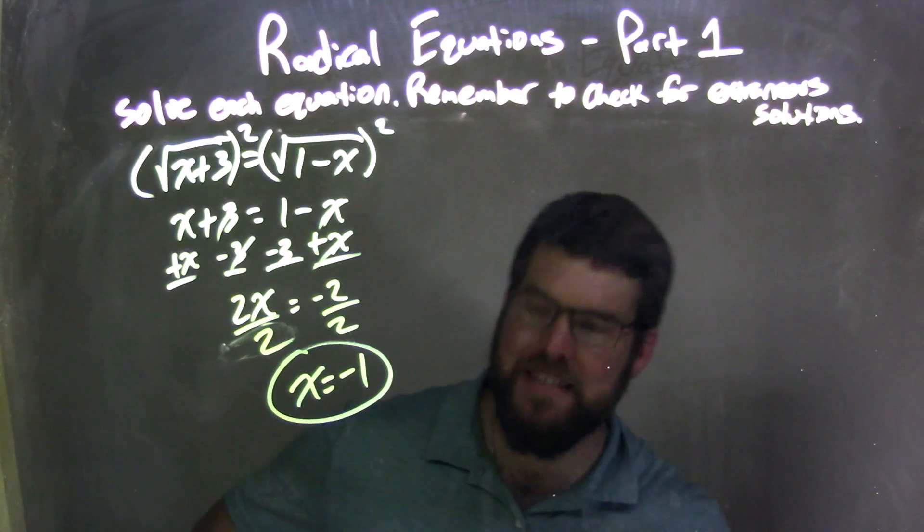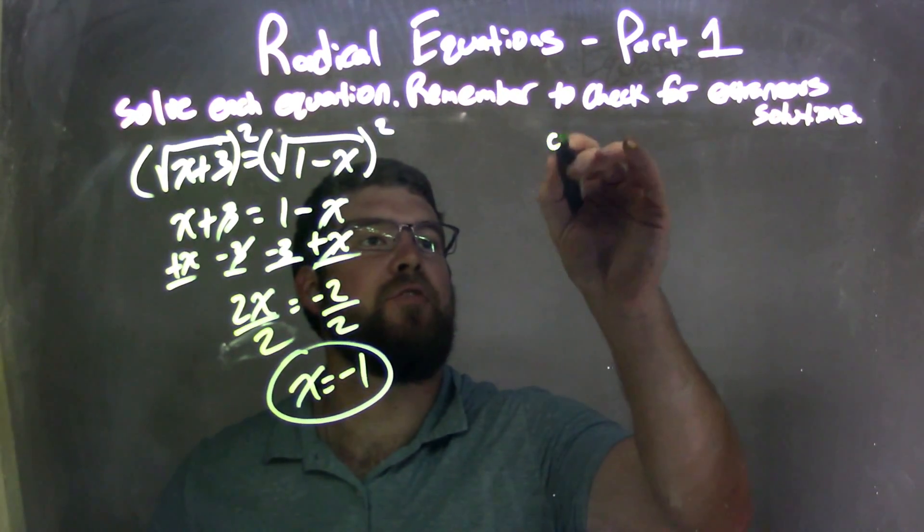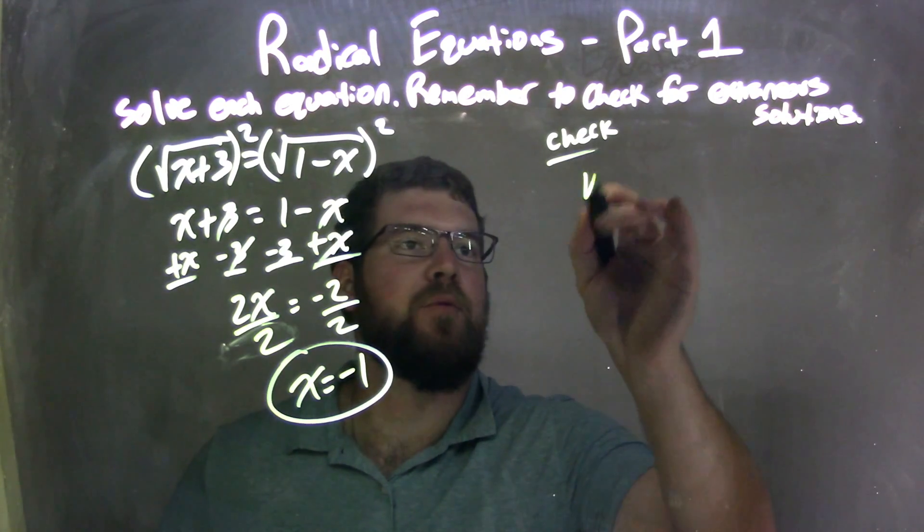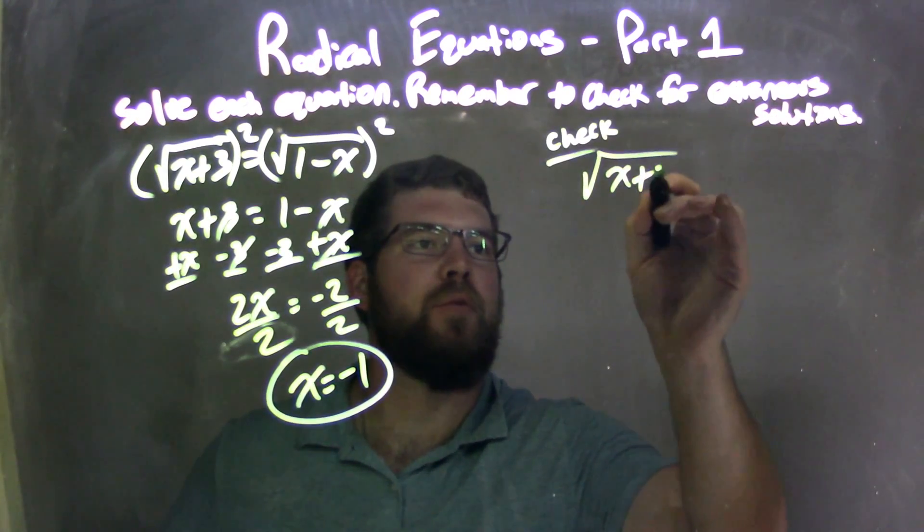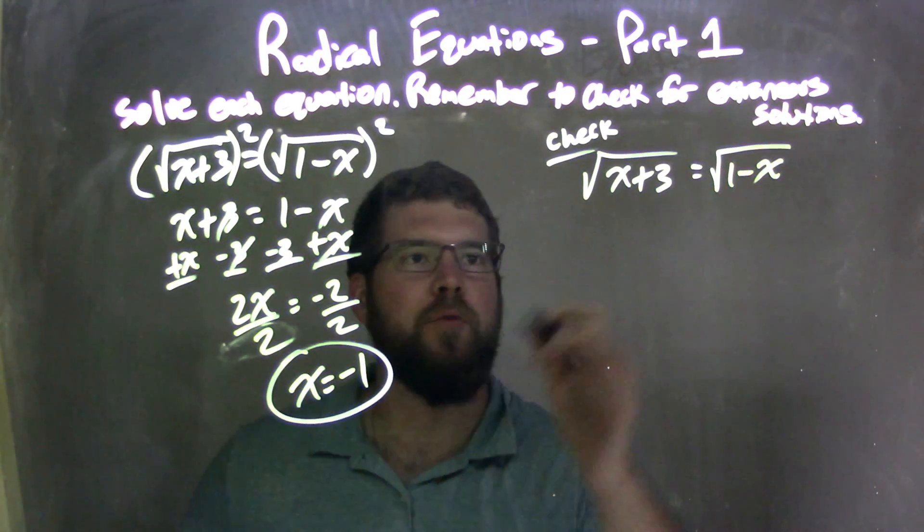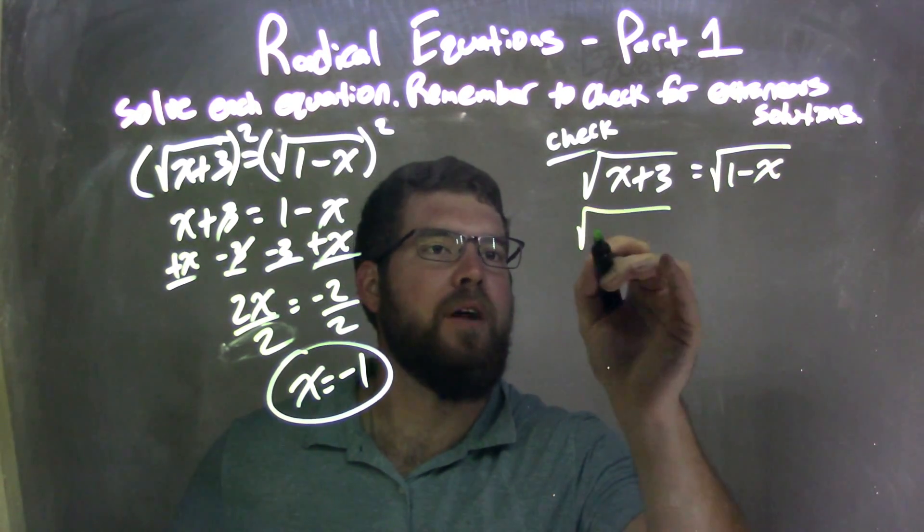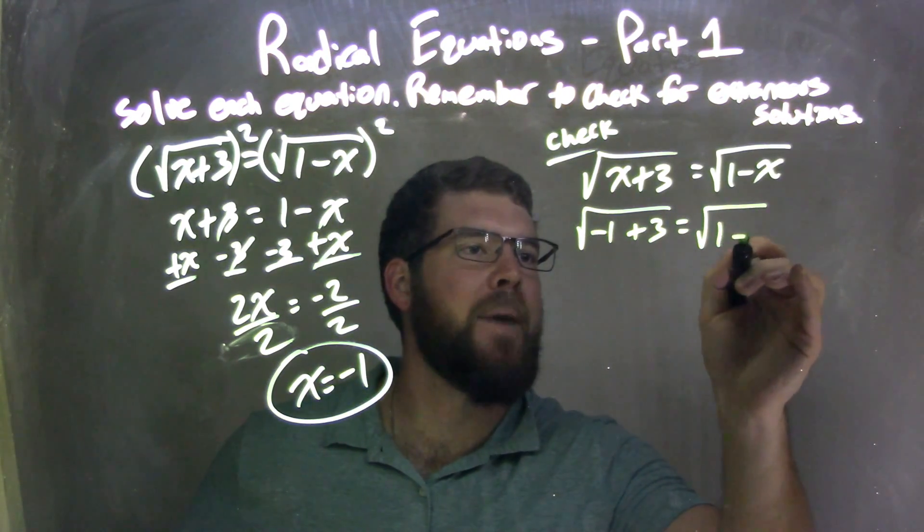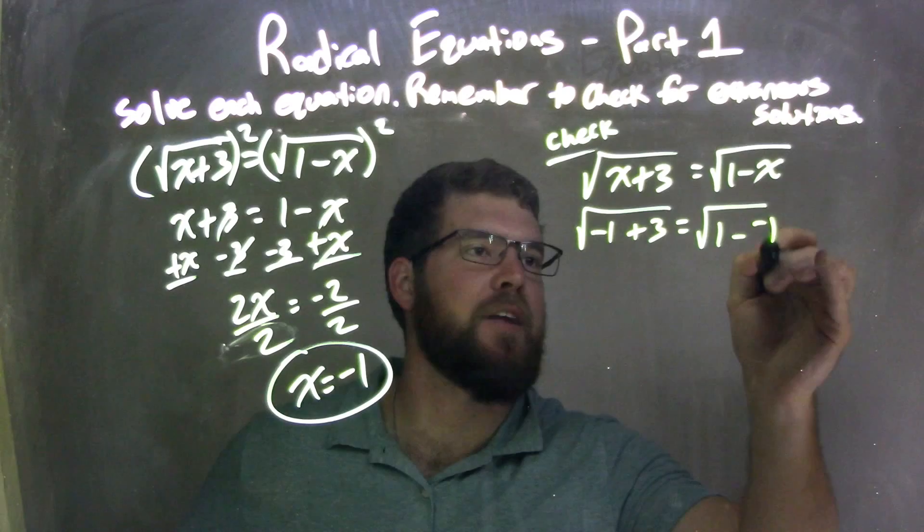So, we need to check to see if that's a correct answer. So let's check and I'll check for that extraneous solution. So we have square root of x plus 3. I'm rewriting the equation. Square root of 1 minus x. Let's plug negative 1 in for x. So we have square root of negative 1 plus 3 equals square root of 1 minus, now I'm putting that negative 1 in.